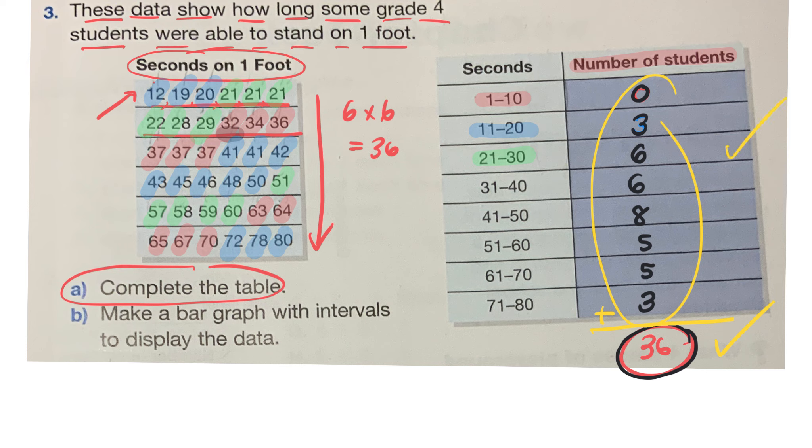Okay, so for part B, we have to make a bar graph with intervals to display the data. So what can you tell me about a bar graph? It's a graph that shows the data using rectangular bars. Excellent. For this one we're told we're going to use intervals. Now we're already given the intervals here. We already have a range of seconds.